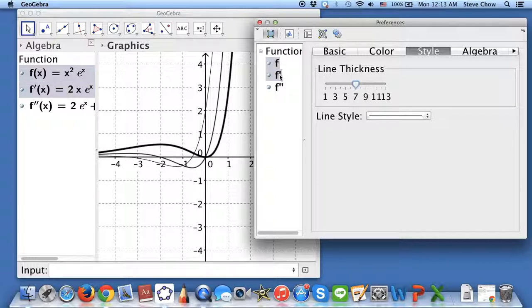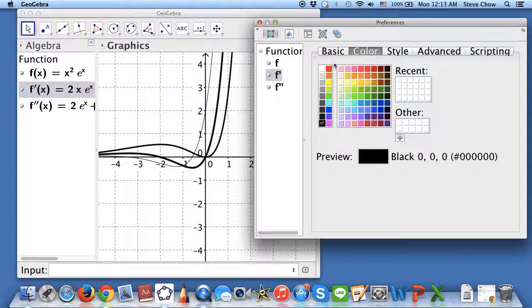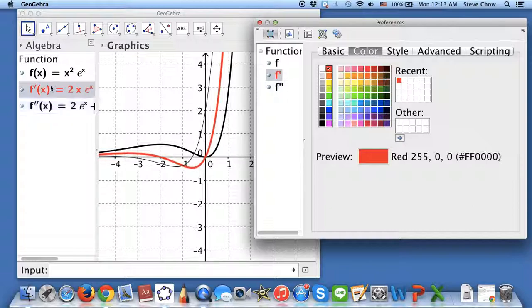Anyways, let's fix the first derivative now. So let me select first derivative, and let me also do it to 7. But then let me just go to color. Let me change the first derivative to red. So now you see that red part is the first derivative. And on the left-hand side, the equation is also in red now.